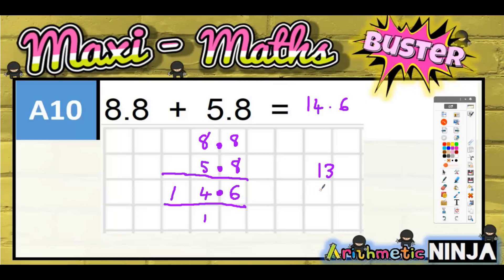So it's 13 plus the 1.6 which is going to be 14.6. But whichever way you do it, you need to be getting 14.6.